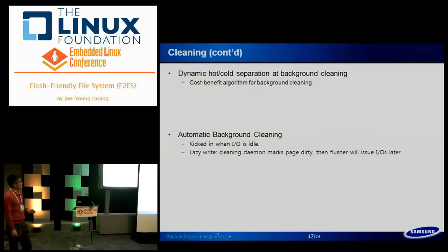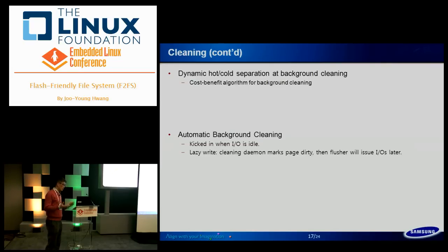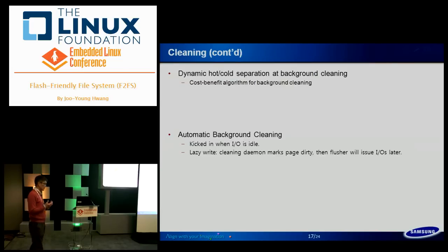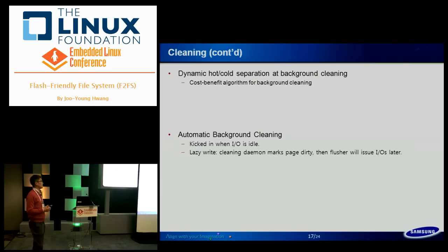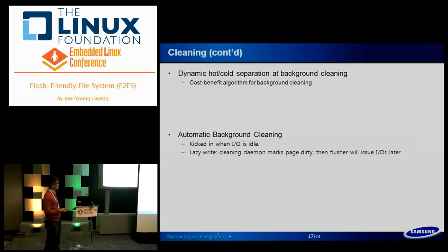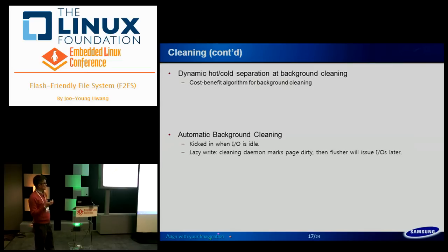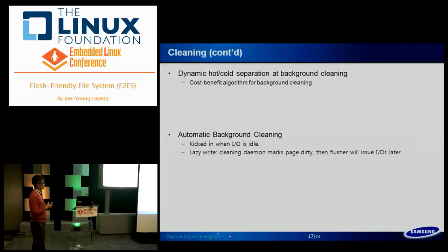The hot-cold separation policy is applied at data writing time — at file creation or data update time — and also done in the background during cleaning. We use a cost-benefit policy to select a cold victim segment for background cleaning. The segment age determines temperature: a frequently updated segment is young and hot, while a less updated segment is old and cold. We select old segments to consolidate cold data, improving cleaning efficiency afterwards.